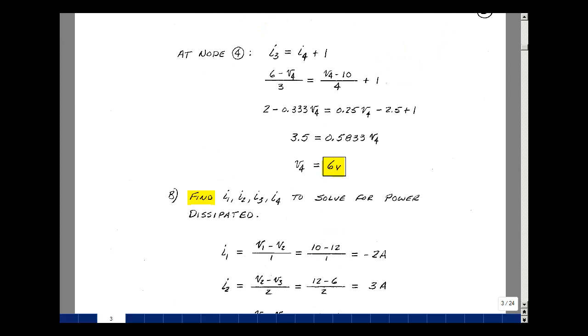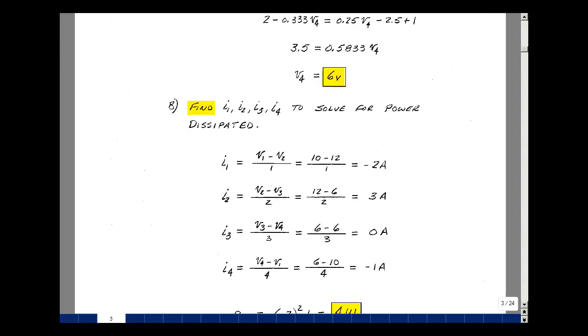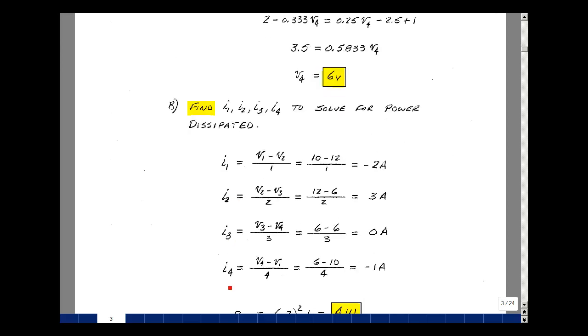Found the node voltages. Let's solve for the current in the resistors, and then we can find the power dissipated by taking I squared times R. We find the currents I1, I2, I3, and I4 on the previous page.